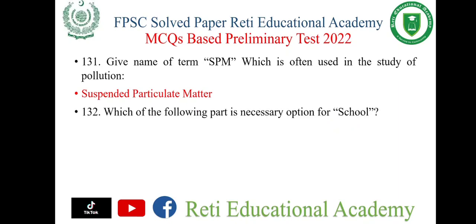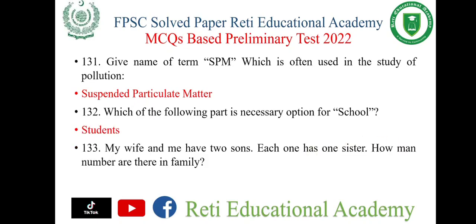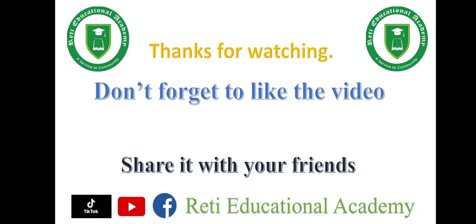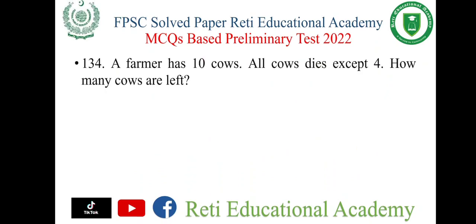Question number 132: Which of the following is a necessary option for school? The right option is students. Question number 133: My wife and I have two sons; each one has one sister — how many members are there in the family? The right option is 5. Question number 134: A farmer has 10 cows; all cows die except 4 — how many cows are left? The right option is 4.